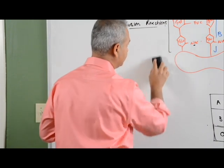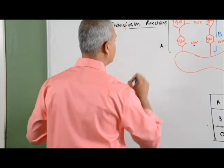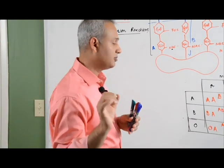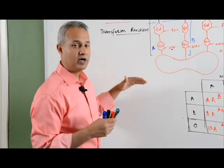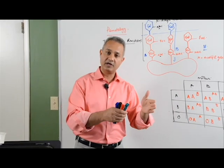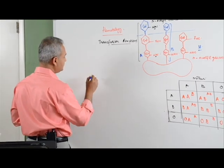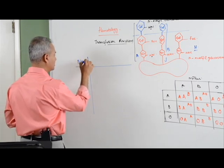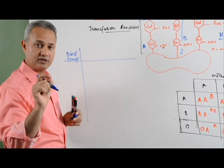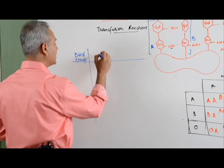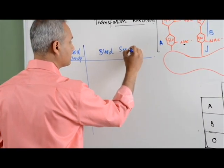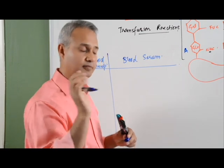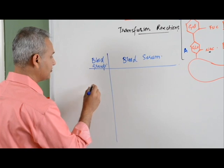Before we go to blood group typing, let us first consider what happens to the serum of a person with a particular blood group. Blood group refers to the antigen present on the surface of the RBCs. Let us think about what is on your RBC and what is in your serum. I am blood group B, so let us start from that example.